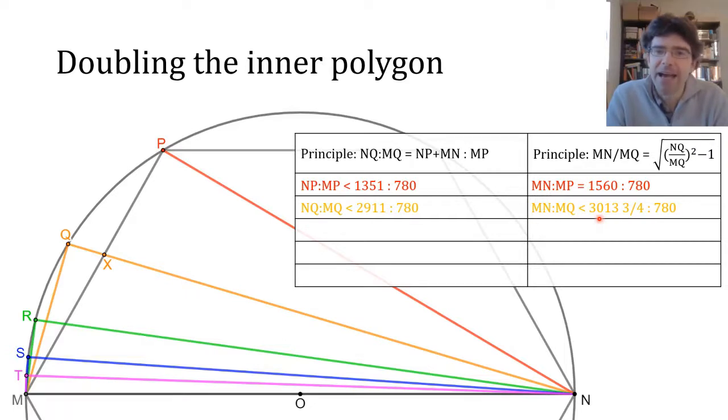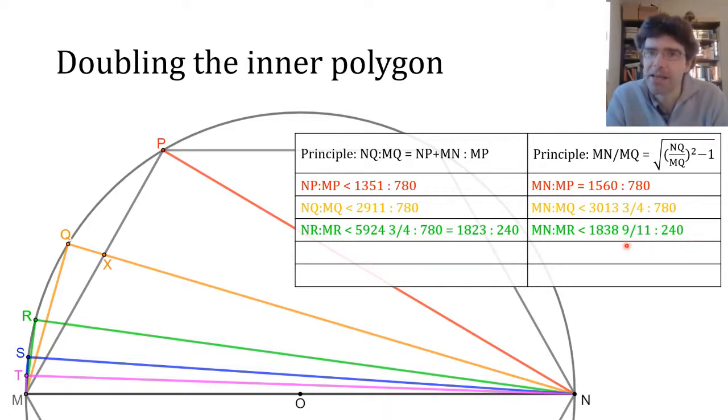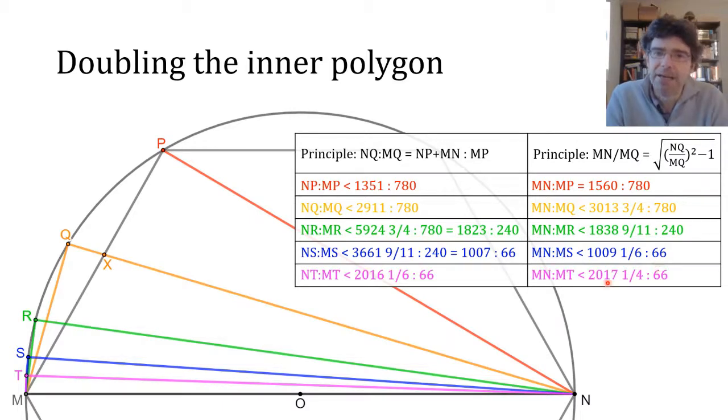Once we bisect again we get NR to MR, just a simple matter of adding. And here Archimedes spots a reduction to smaller numbers which is going to make life easier for him to extract square roots with slightly smaller numbers. So MN to MR is actually less than 1838 and nine elevenths to 240. We've gone from expressing ratios to 780 to expressing them to 240. And here again we can see he's actually chosen nine elevenths not because it's the most accurate fraction he could come up with but because it's going to lead to a nice simplification in the next stage. When we look at NS to MS this ratio to 240 reduces to the ratio 1007 to 66. And so we get MN to MS, NT to MT, MN to MT.